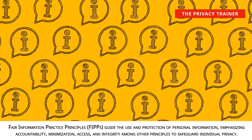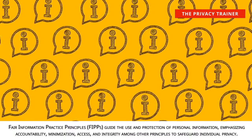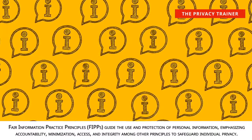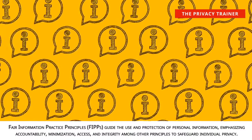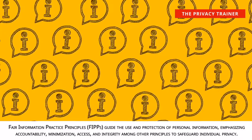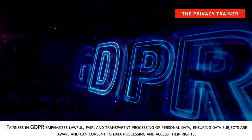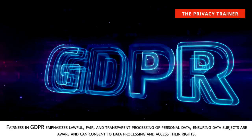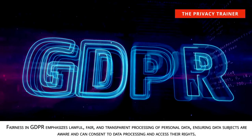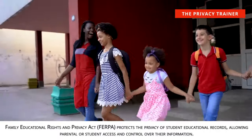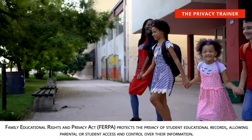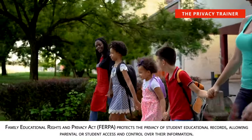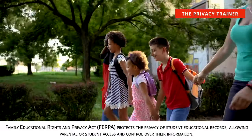Fair Information Practice Principles. Guide the use and protection of personal information, emphasizing accountability, minimization, access, and integrity among other principles to safeguard individual privacy. Fairness in GDPR. Emphasizes lawful, fair, and transparent processing of personal data, ensuring data subjects are aware and can consent to data processing and access their rights. Family Educational Rights and Privacy Act, FERPA. Protects the privacy of student educational records, allowing parental or student access and control over their information.